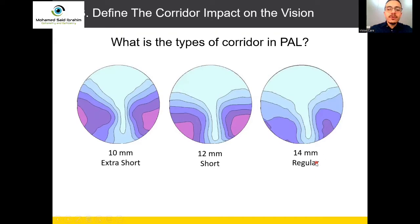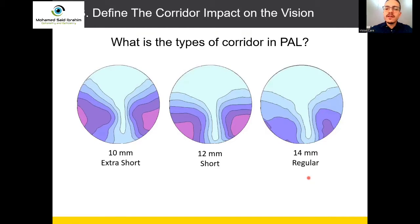These are the three types we have in Nikon. But some older progressive lenses or other companies also have long corridor — more than 14mm, like 15, 16, 17, or 18. This is called very long or long corridor.